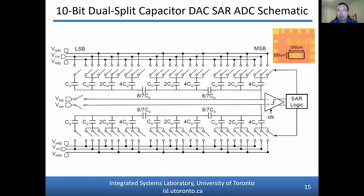A 10-bit SAR ADC prototype was fabricated in 65 nanometer CMOS technology. The schematics of the SAR ADC are shown here. Split capacitors have been used to reduce the area and capacitive load presented by the capacitive DACs. When multiple split capacitors are used, the sensitivity to parasitic capacitance increases.